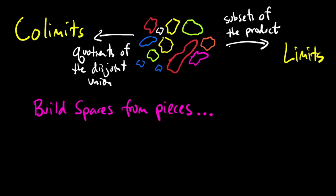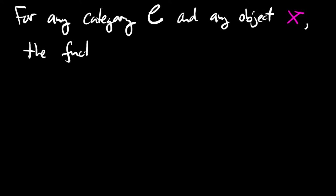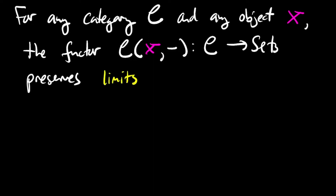So it's natural when you're trying to understand an invariant, like π₁, to understand the extent to which it preserves limits or colimits, because then you can compute the invariant on complicated objects by computing it on the simpler objects that comprise it. Now, to get started with this idea, let me point out a very general fact: representable functors preserve limits. That is, for any category C and any object X in that category, the functor from C to sets defined by sending an object Y to the set of maps from X to Y preserves limits.